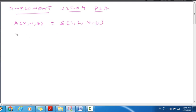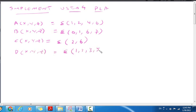Function B of XYZ equals sigma 0, 1, 6, 7. C of XYZ equals sigma 2, 6. D of XYZ equals sigma 1, 2, 3, 5, 7.